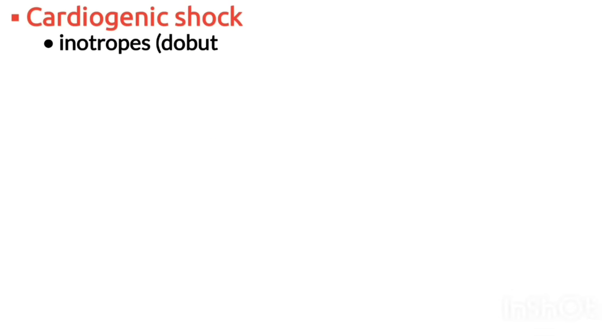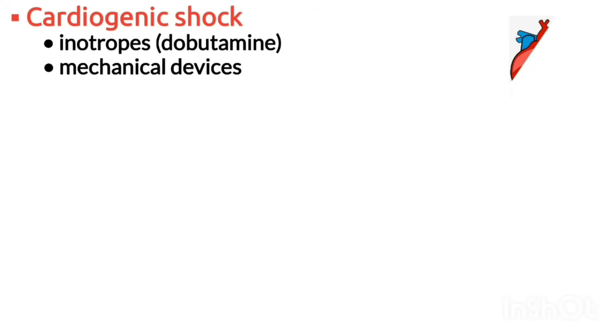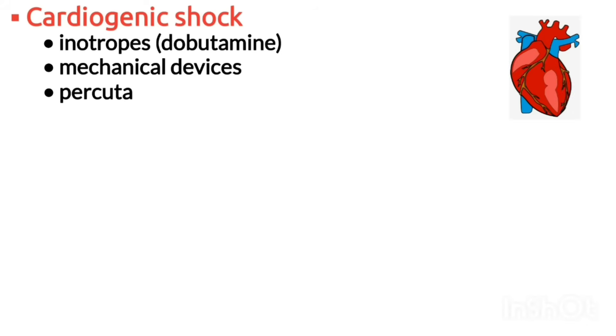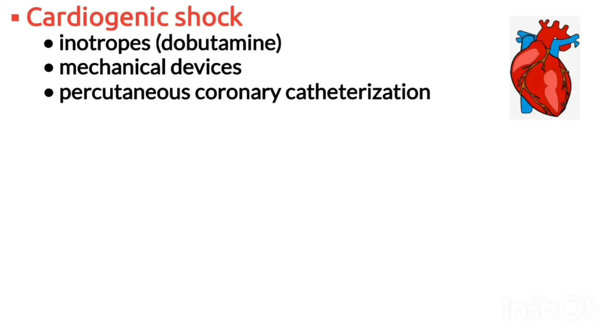Cardiogenic shock is treated with inotropes like dobutamine, mechanical devices like an intra-aortic balloon pump, and percutaneous coronary catheterization if a myocardial infarction is the cause.